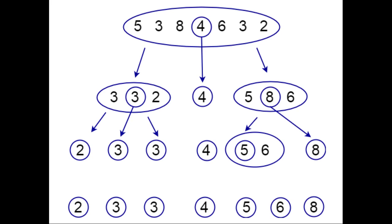In this example, the median element has been chosen as the pivot element. According to this chart, the numbers which are lesser than four have to be placed on the left side of the list and those greater than four are to be placed on the right side. Here, four has been taken as the median.